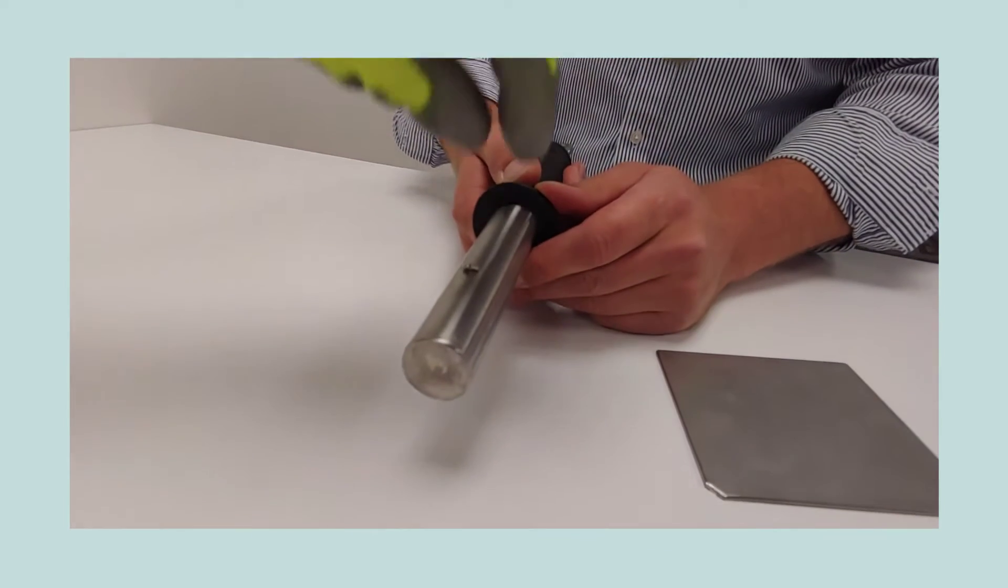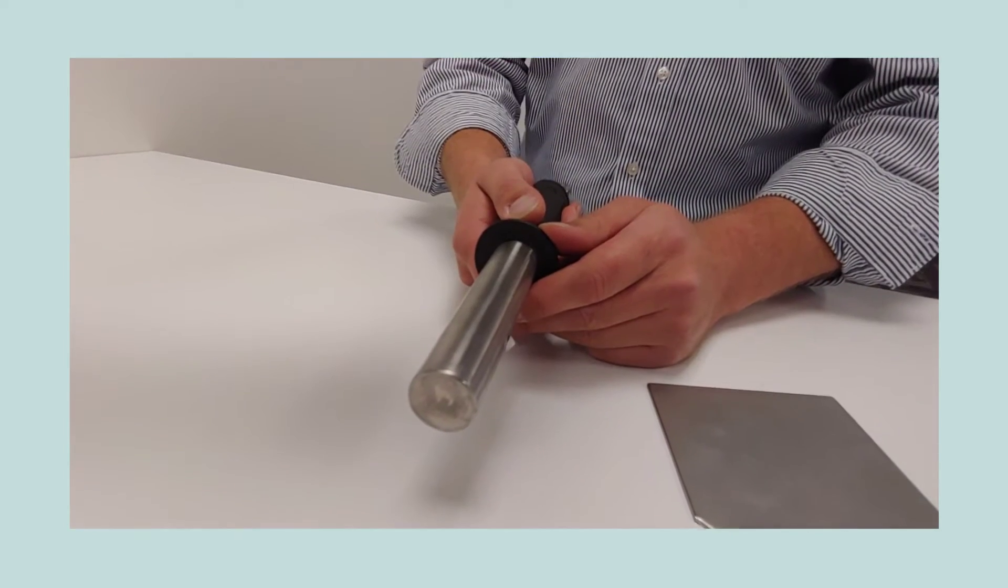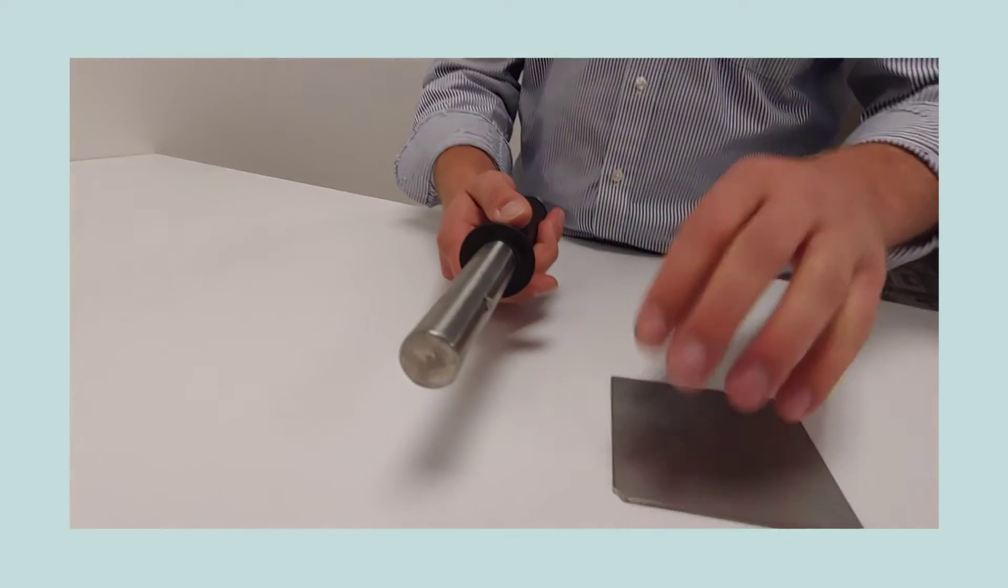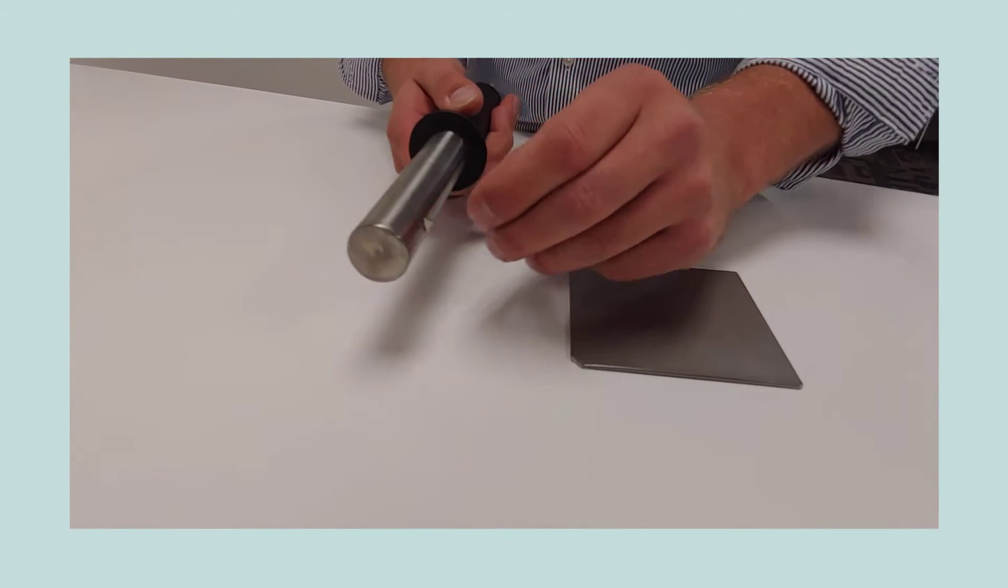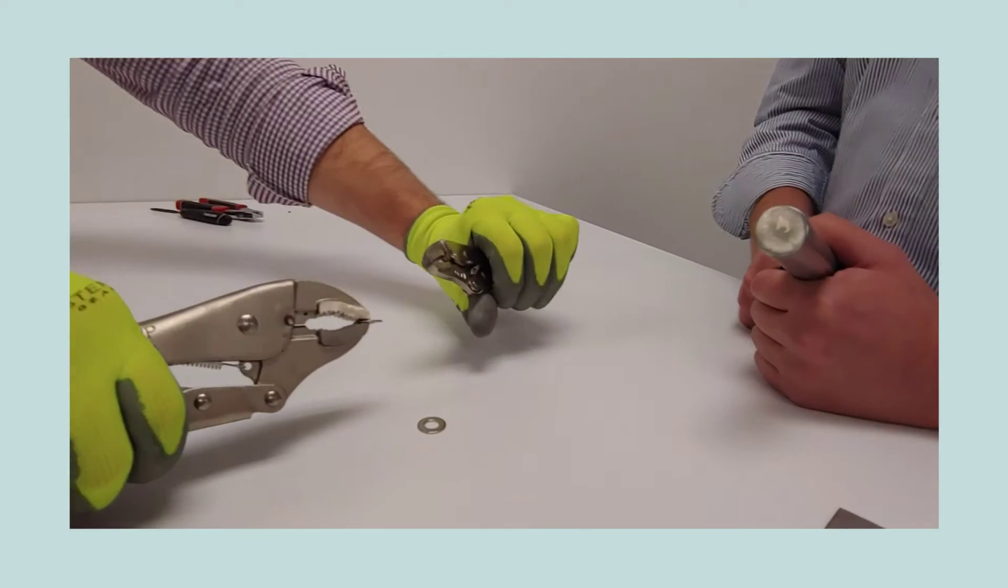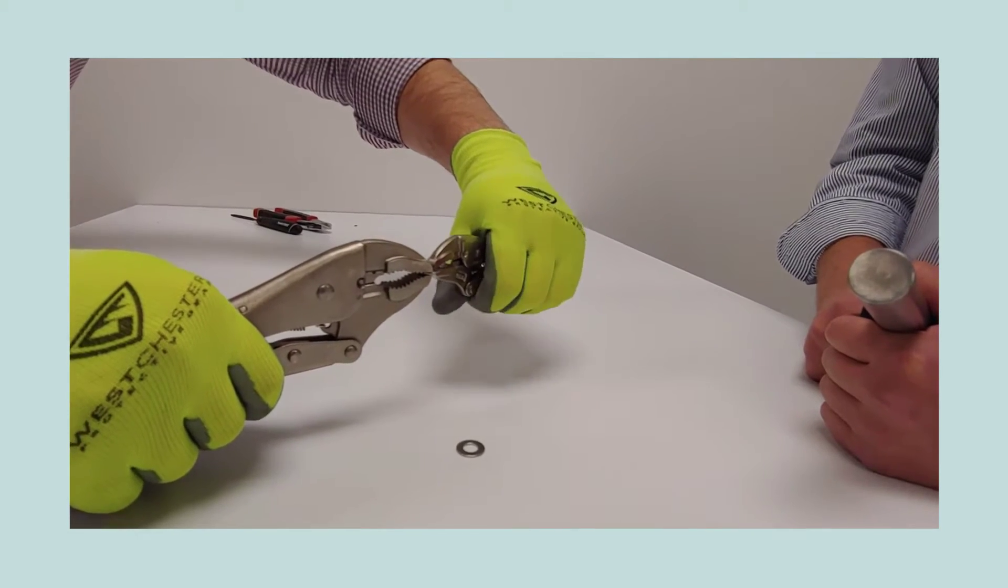The more something is worked, the more something is fatigued, the more work hardened it becomes and the more magnetic it becomes. When something gets worked extensively, in other words, a washer like this might fall into a grinder or mill.